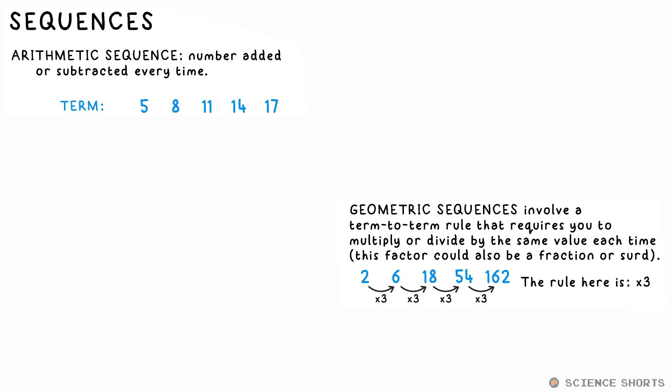You could be presented with the start of a sequence and asked to determine what the rule is or just carry on the sequence, which requires you know what the rule is anyway. Here, the rule is fairly obvious. It's add three every time.